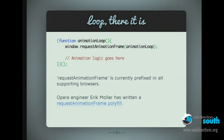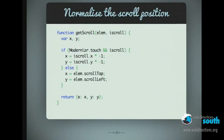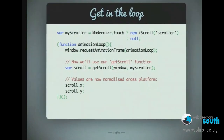requestAnimationFrame is currently prefixed in all browsers but there's a polyfill you can use — the unprefixed version also patches it in for old browsers that don't support it. Here's an example of how you might approach normalizing scroll positions across platforms. It's a simple function where you pass in the scrolling element for desktop or the iScroll instance for touch devices, then test if we're on a touch device — if we've got the iScroll instance, use its X and Y positions; if not, use the desktop's scrollTop and scrollLeft, returning X and Y properties. When we put that into our loop, we can get the scroll position whether we're on desktop or touch, and code in a way that's reusable in both cases.